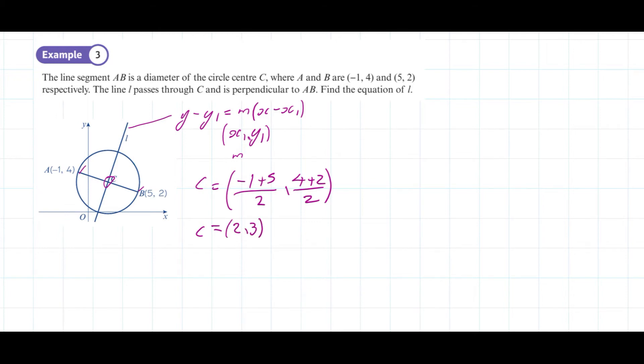Now the next thing we need to do is work out the gradient of AB, and we're going to use that to work out the gradient of the perpendicular. So our notation for that is m_AB, which stands for the gradient of AB. And we're going to use (y2 - y1)/(x2 - x1), which